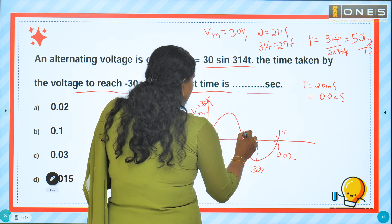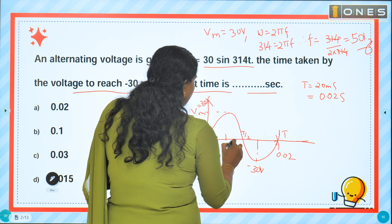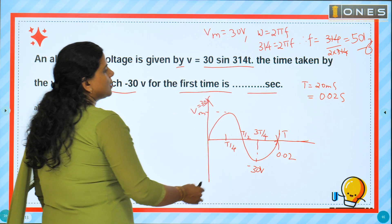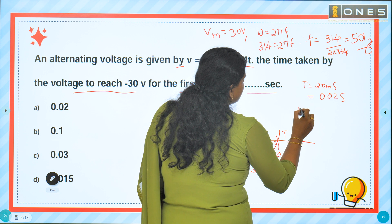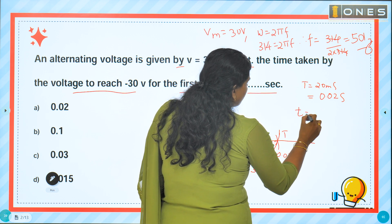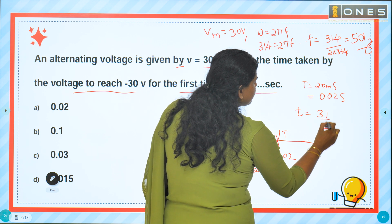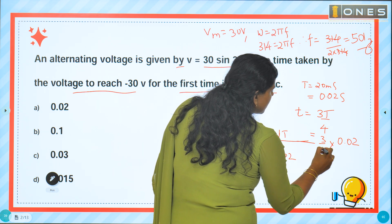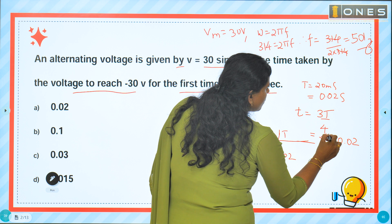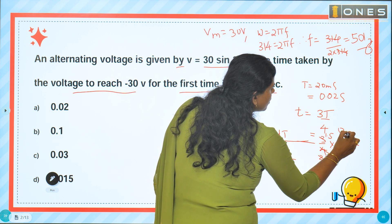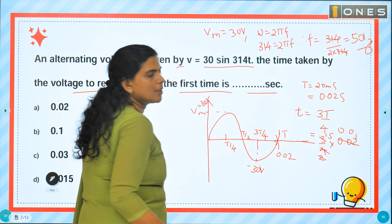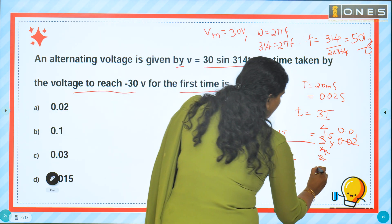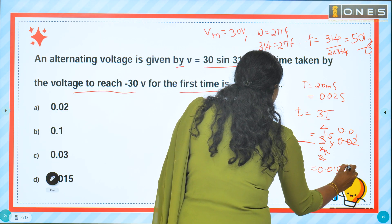Looking at the waveform: T/4, T/2, and 3T/4 are the key time angles. The voltage reaches minus 30 volt at 3T/4 for the first time. So time taken equals 3T/4, that is 3/4 into 0.02 seconds, which equals 0.015 seconds.